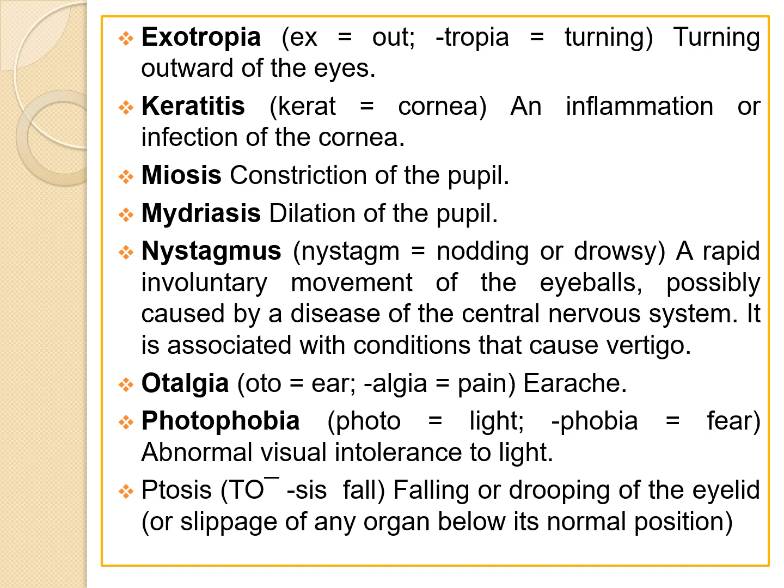The next term is nystagmus — a rapid involuntary movement of the eyeballs, possibly caused by a disease of the central nervous system. It is associated with conditions such as vertigo. The next term is otalgia. 'Oto' means ear, and 'algea' means pain, so otalgia means earache or ear pain.